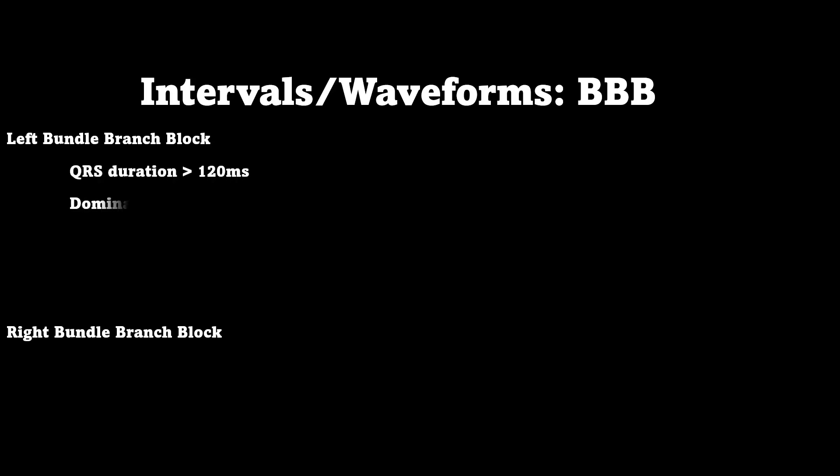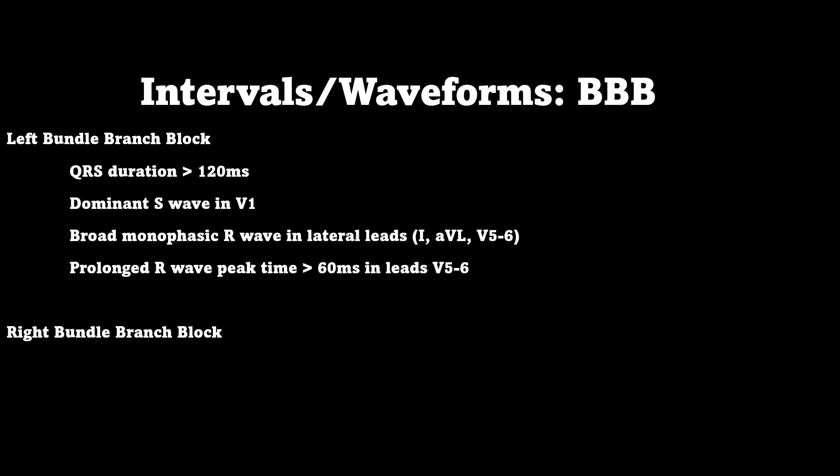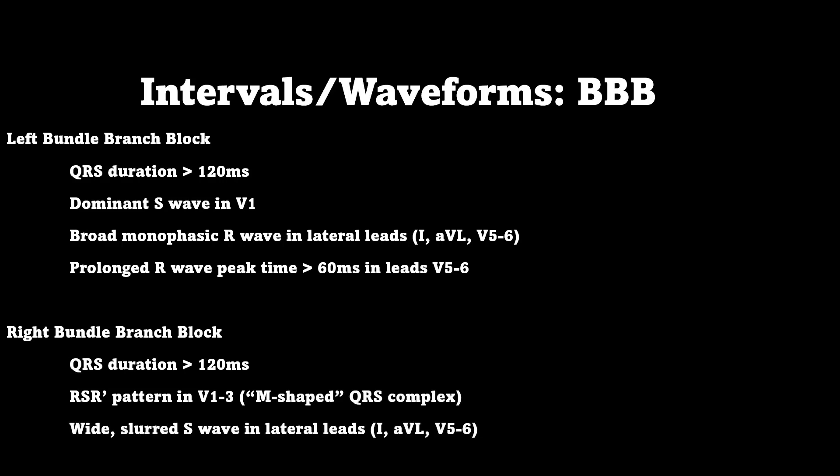A left bundle branch block will have a QRS duration of over 120 milliseconds, a dominant S-wave in V1, a broad monophasic R-wave in your lateral leads, and a prolonged R-peak time of more than 60 milliseconds in V5 and V6. A right bundle branch block will have a QRS duration over 120 milliseconds, an RSR' pattern in V1 to V3, and a slurred S-wave in your lateral leads.